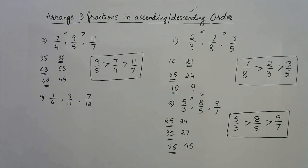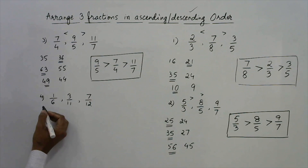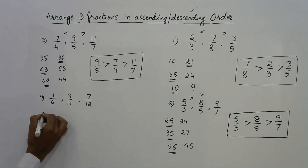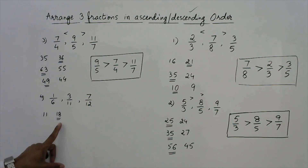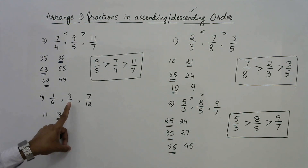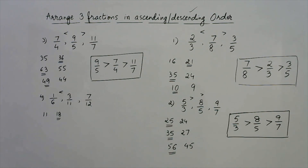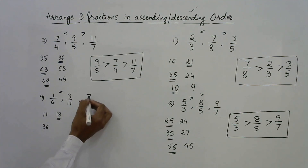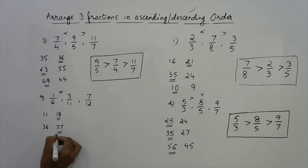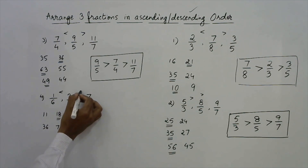Let's have the final question. See the first comparison of the first two fractions — 1/6 and 3/11: 1 into 11 is 11 and 3 into 6 is 18. The product on the right-hand side is more, so the right-hand fraction is greater — 3/11 is greater than 1/6. Now compare the second and third — 3/11 and 7/12: 3 and 12 give 36 and 7 and 11 give 77. On the right-hand side we have the greater product, so 7/12 is greater than 3/11.